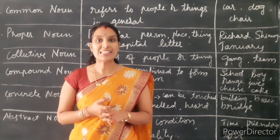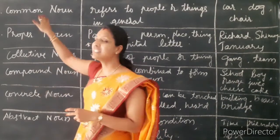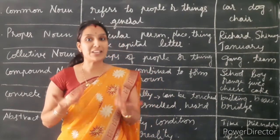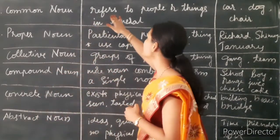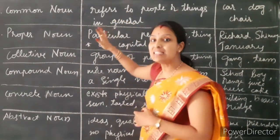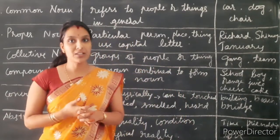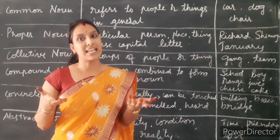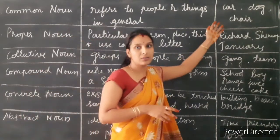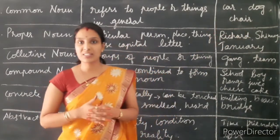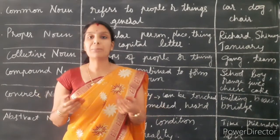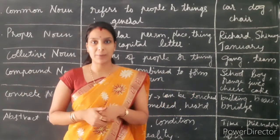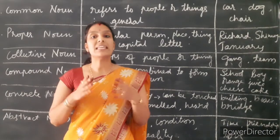First one is common noun. The word itself suggests to us what the meaning of common noun is — it refers to people or things in general. Common noun is a word which refers to people or things in common or in general. For example, car, dog, chair. These are words we call in common — it may refer to anybody's car, anybody's chair, whoever's dog it might be. So it is in general or in common.